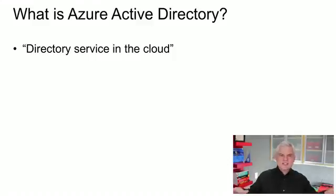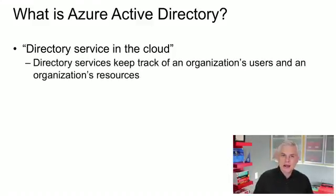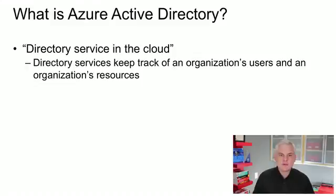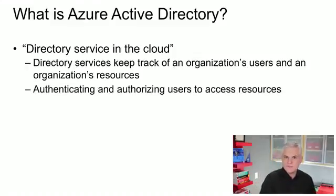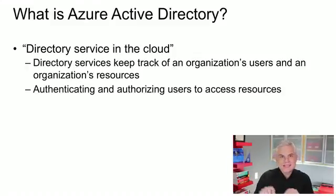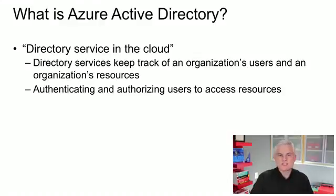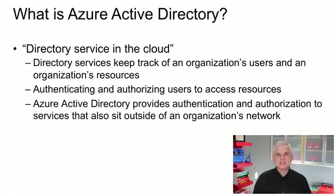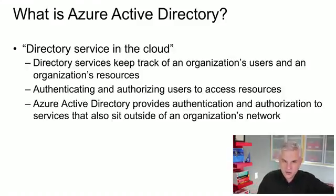From a very generic standpoint, any directory service will keep track of an organization's users and resources. At a minimum, a directory service can be used to authenticate users — making sure they are who they say they are — and then authorize users to access various resources, whether that's a shared network drive, a printer, or an intranet website. Azure Active Directory is no different in what it does; it's only different in that this directory service sits outside of an organization's network and provides authentication and authorization services externally.